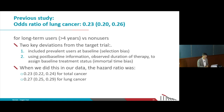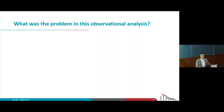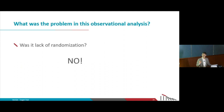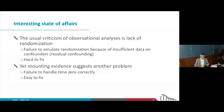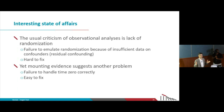So think about this: what was the problem in this observational analysis? Was it lack of randomization? The answer is no. We can show with the same observational data that if we emulate a target trial, we get the same result as actually randomized trials: no association. In example after example, what we encounter is a situation where the bias had nothing to do with lack of randomization — it was a bias because of deviations from sound study design, from deviations of the emulation of a target trial.